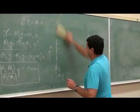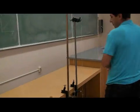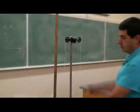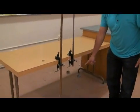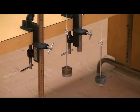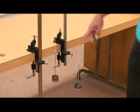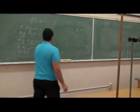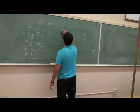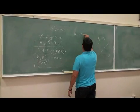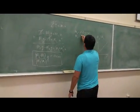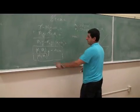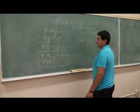Over here you can see the pulleys. I have a meter stick here for reference so we know what the distances are. I have already placed a hanger at 200 grams — a hanger at 200 grams — so right now I have 250 grams on both sides, and then I'm going to add an extra 20 grams. So let's calculate the theoretical acceleration: M1 is going to be 250 grams, M2 is going to equal 270 grams.